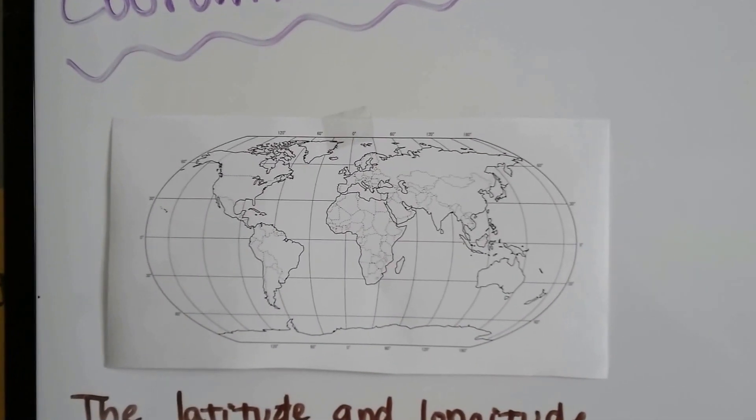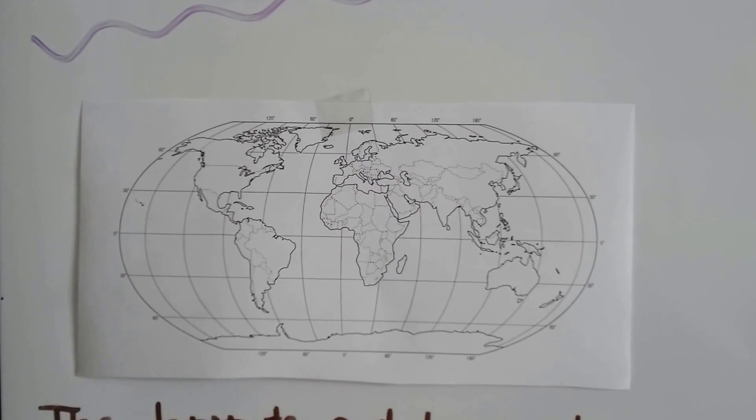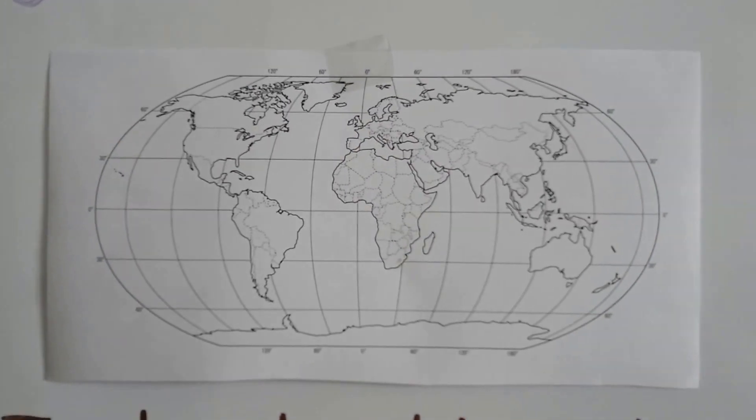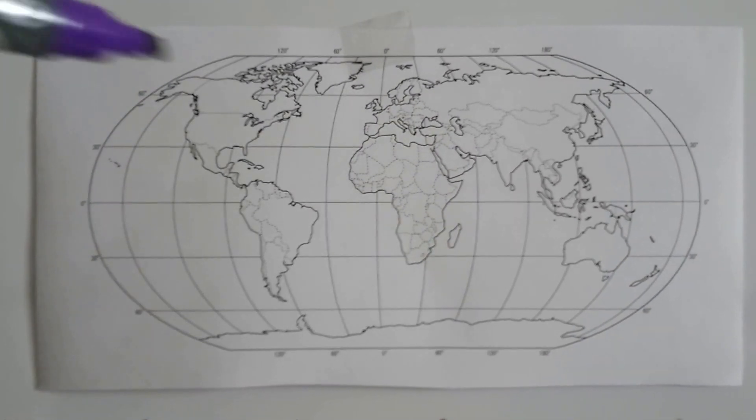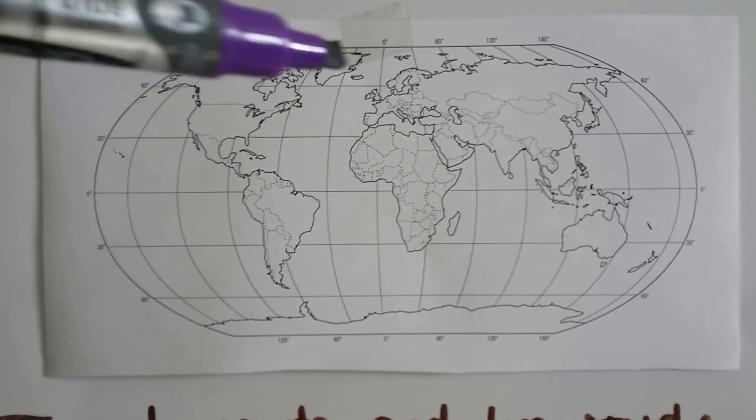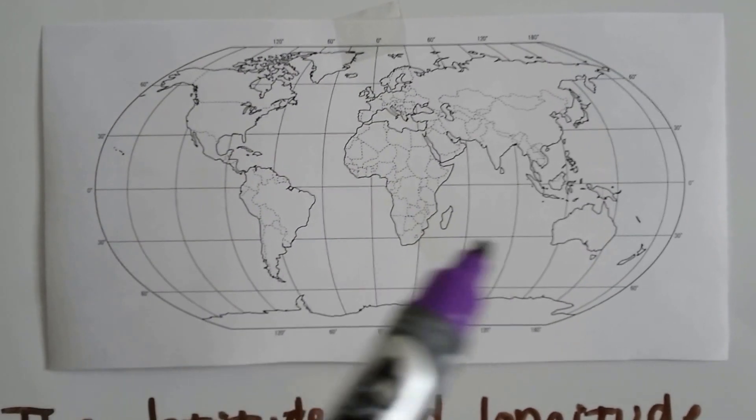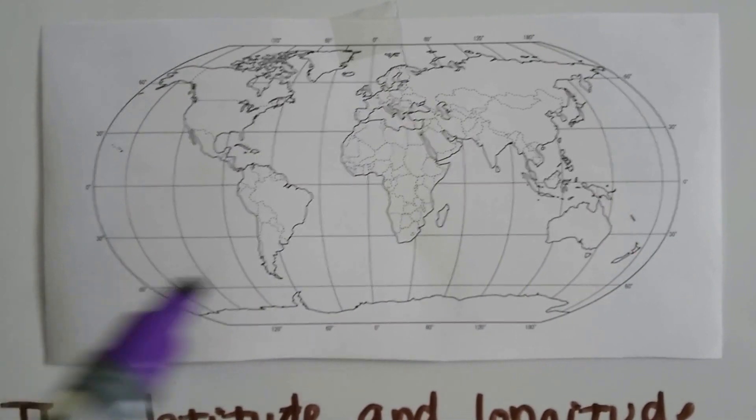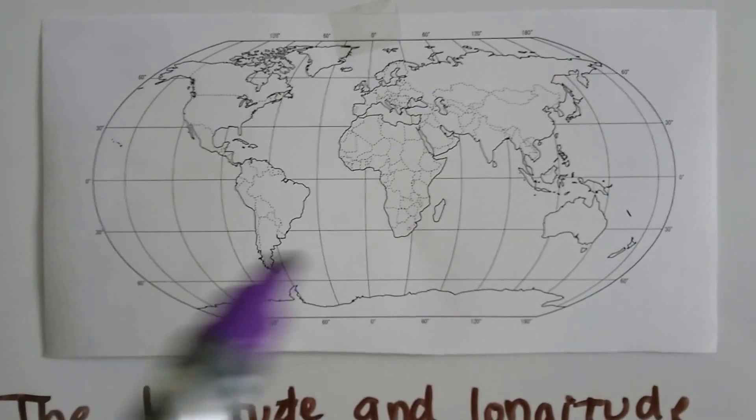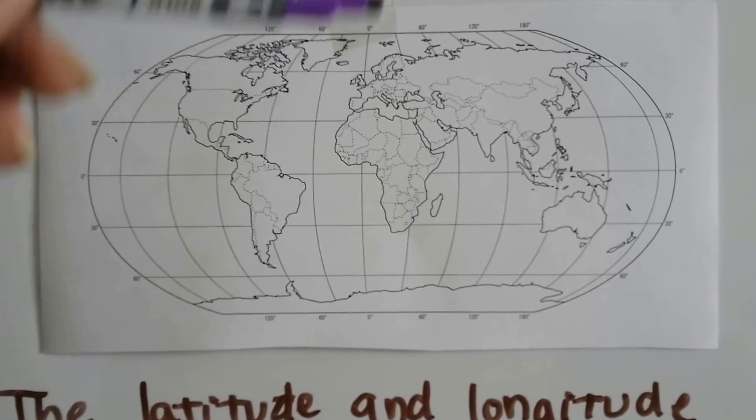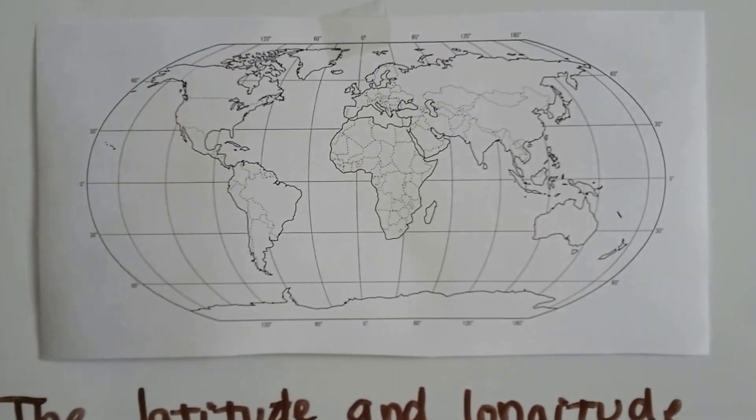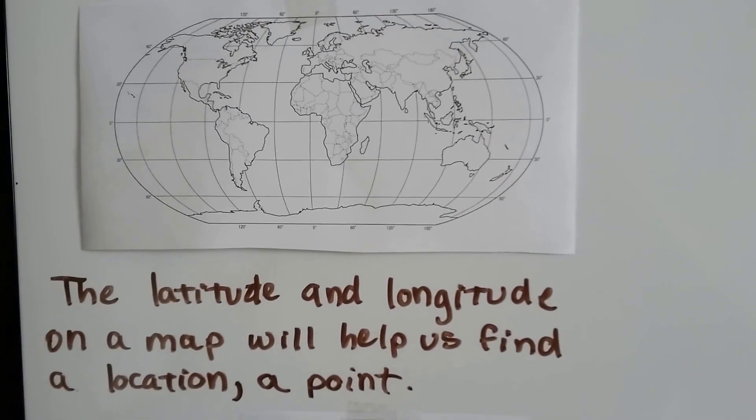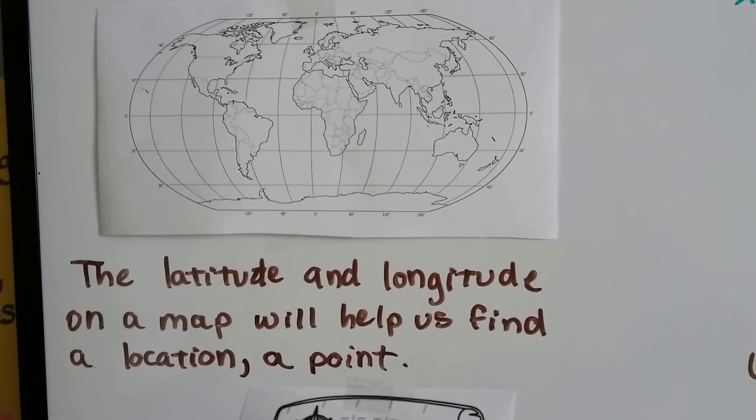We have a map of the world here. And if you can see real closely, there's grid lines, aren't there? See these lines coming down? And then there's lines going across. Well, the lines going across are the latitude lines, and the lines going up and down are the longitude lines. The latitude and longitude on a map will help us find a location or a point.